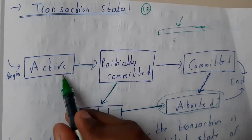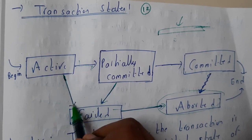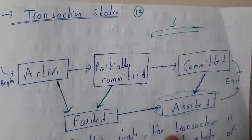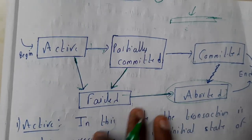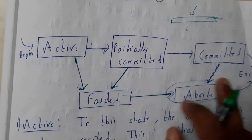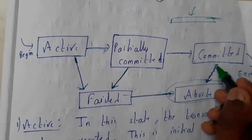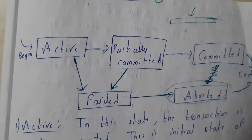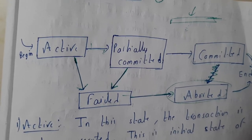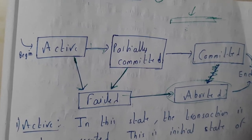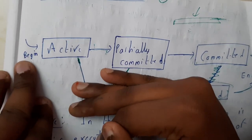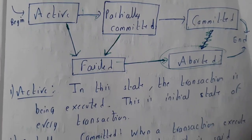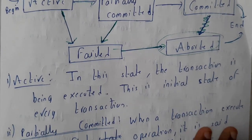Directly without starting, or in between, we can face this failure issue — so in two ways we will be entering into the failure state. From failure, the only option is abort. From abort we end it, and from commit we also end it. I hope everyone is now clear with the diagram we have just drawn.